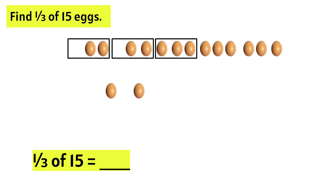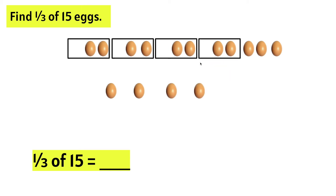Let's make another set of three because we have a denominator of three. Now, we need one of the three eggs. Let's make another set of three eggs and we need one-third of them. Another set of three eggs and we need one-third of them.